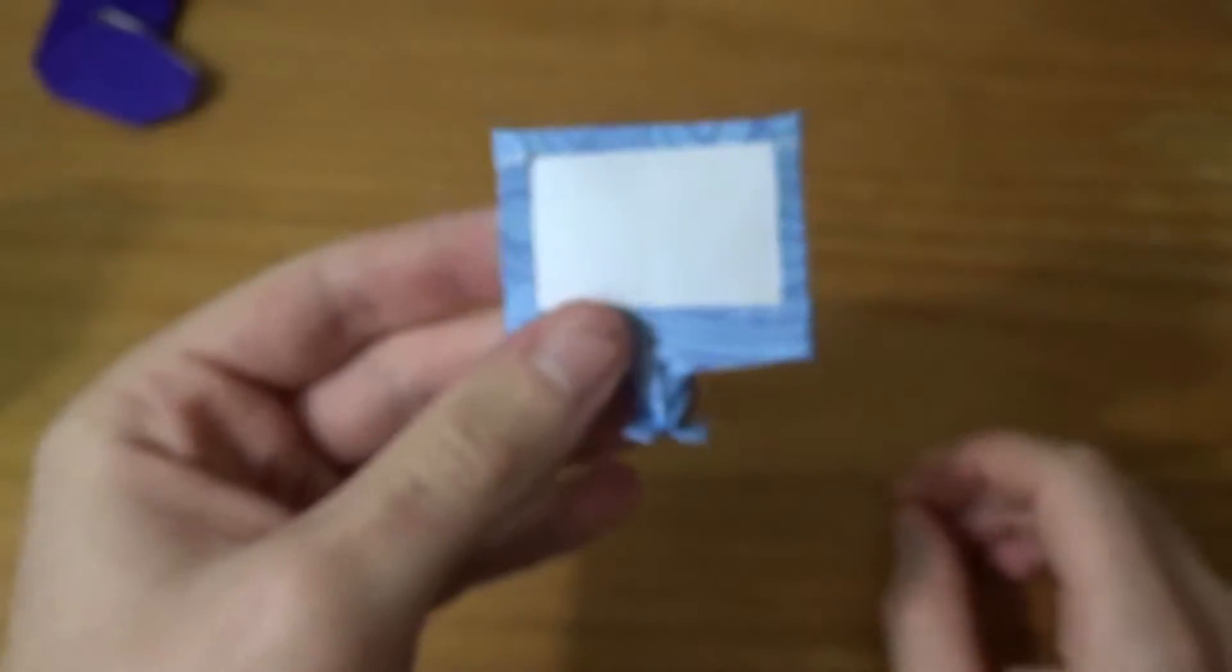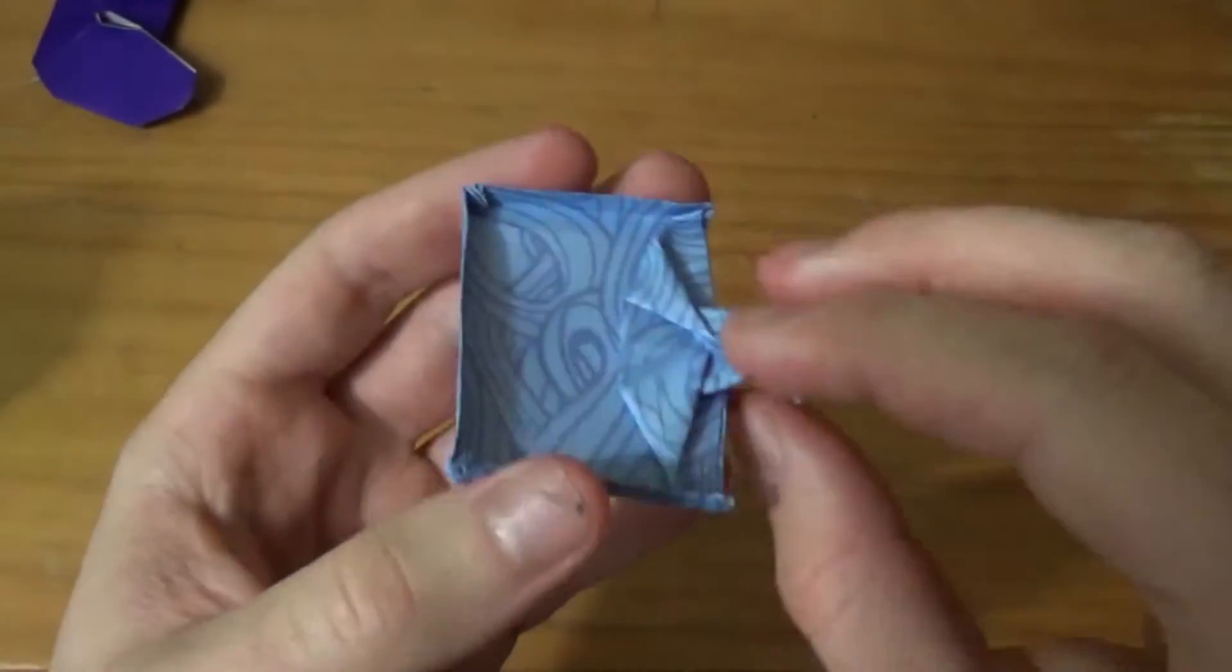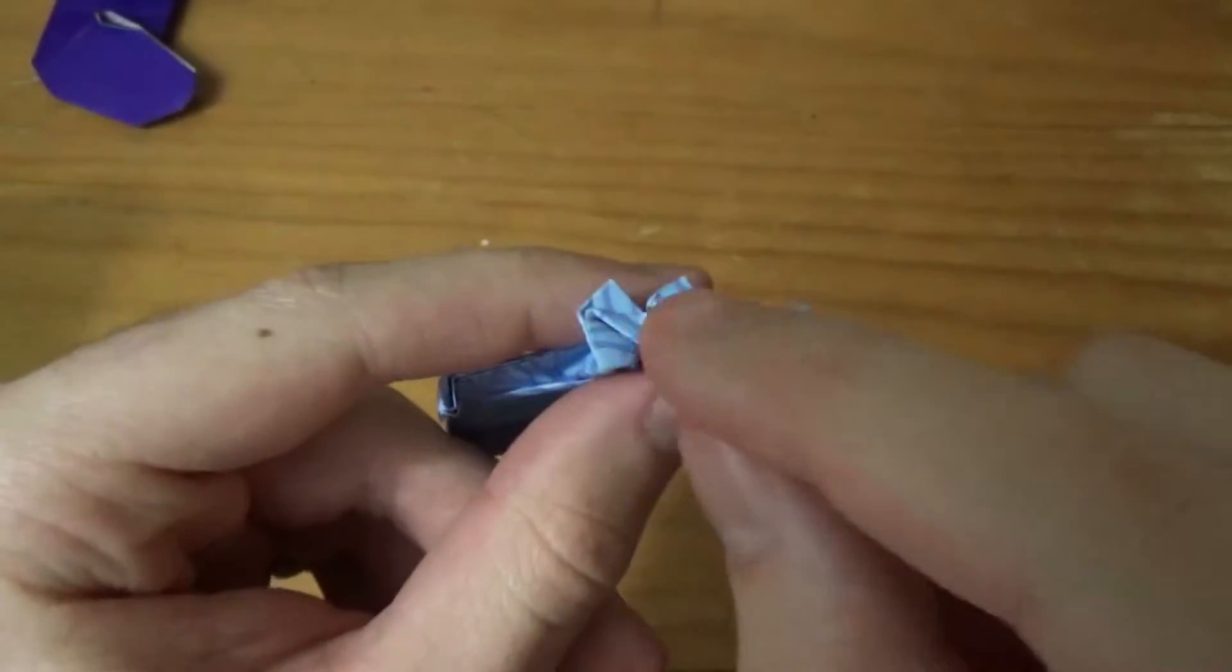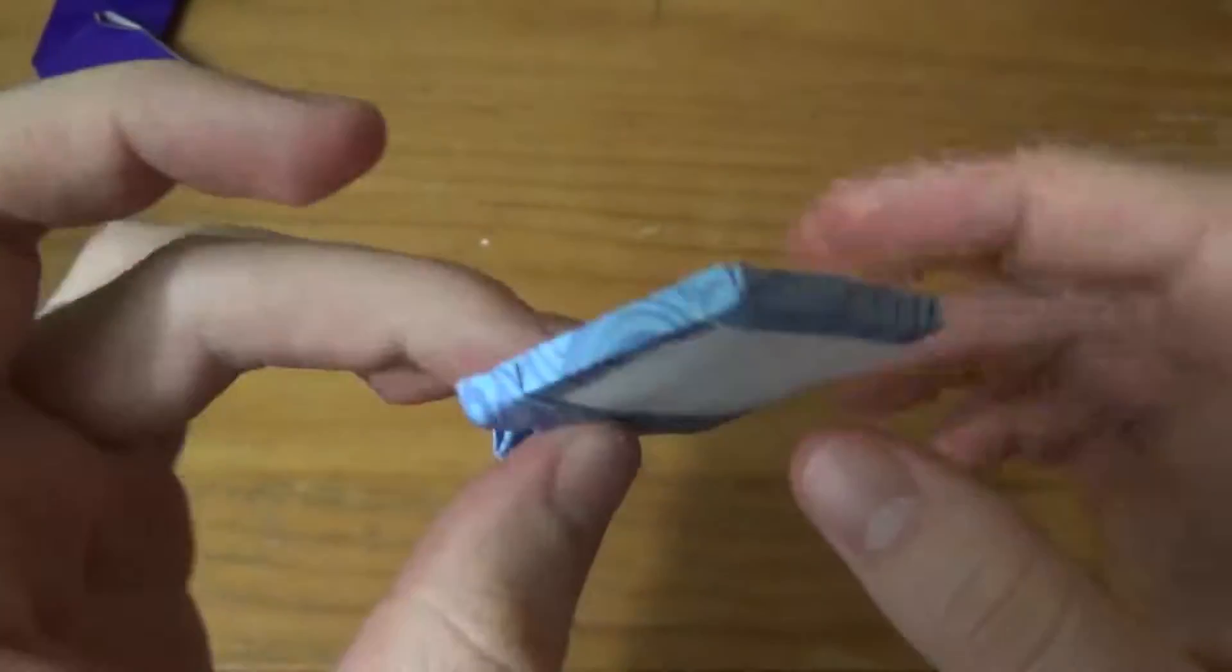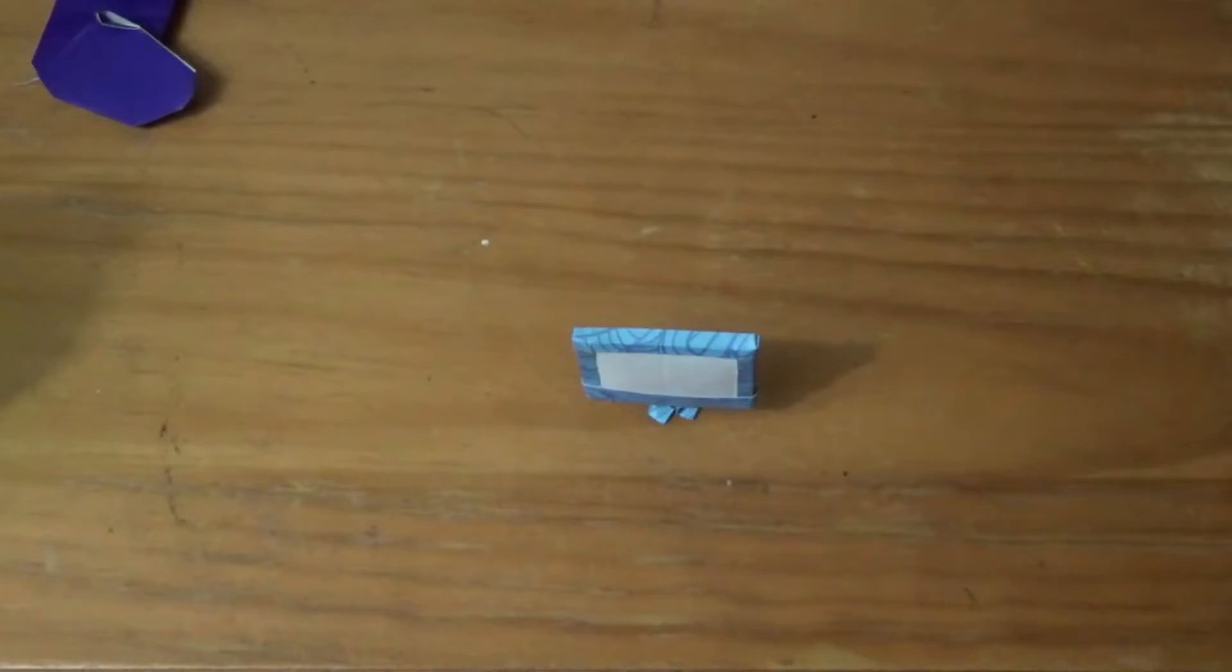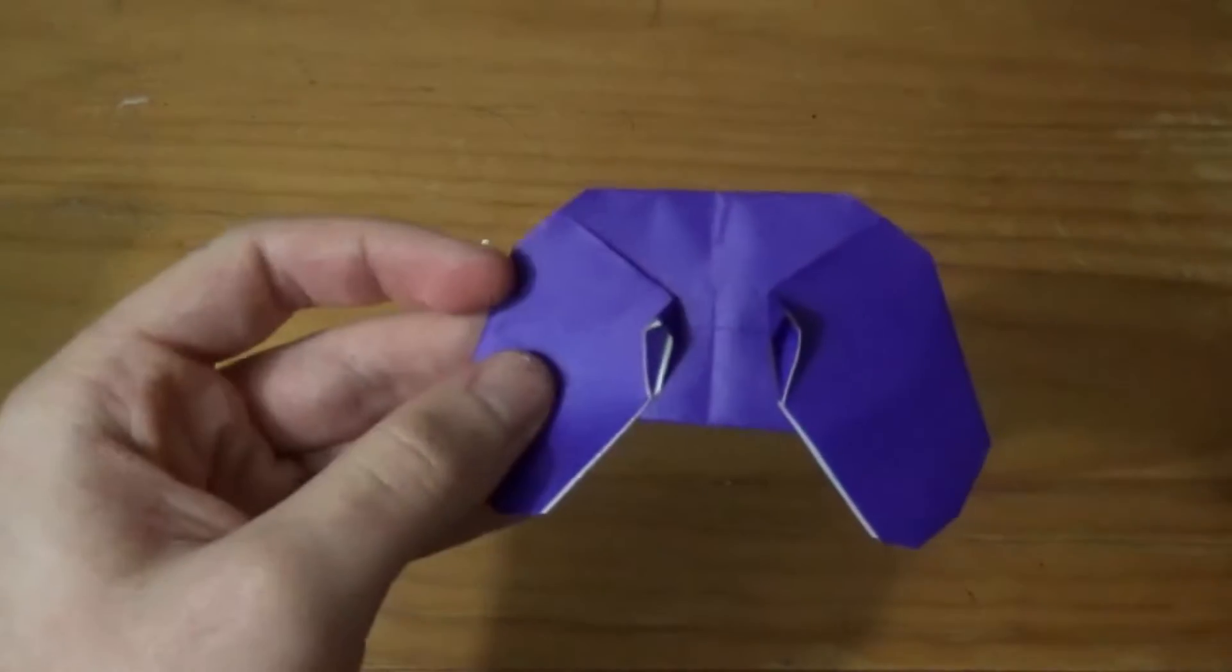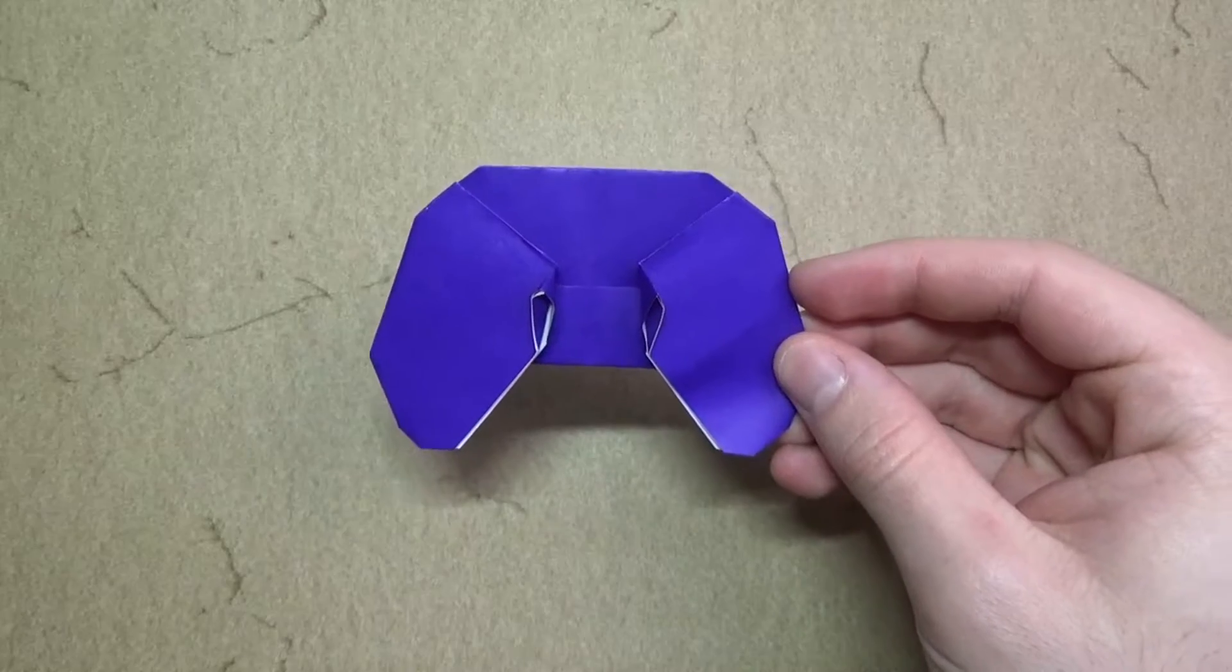But I want to show you this other model that I will teach someday. This is an origami TV, and it's got a nice stand here. It's three-dimensional. You can let it stand like that. So for this model, click right here when I do that video. All right, now on with the gaming controller. Here it goes. All right, ready, set, here it goes.